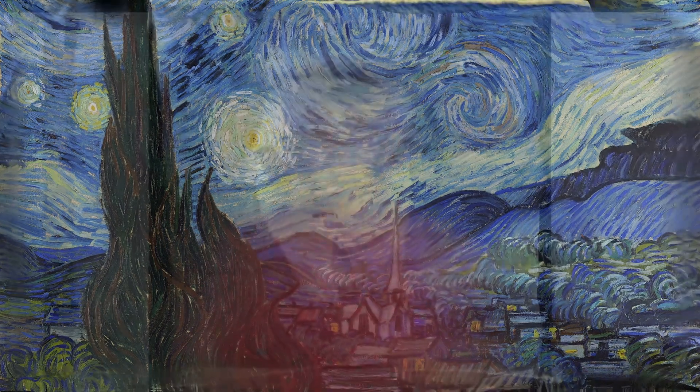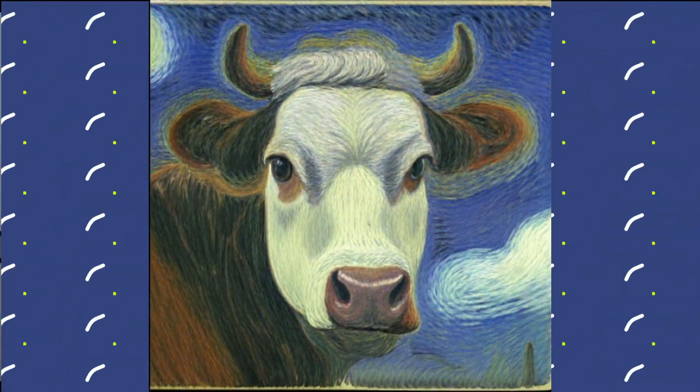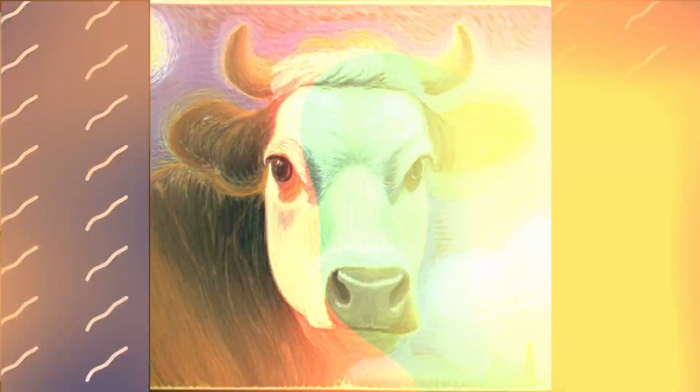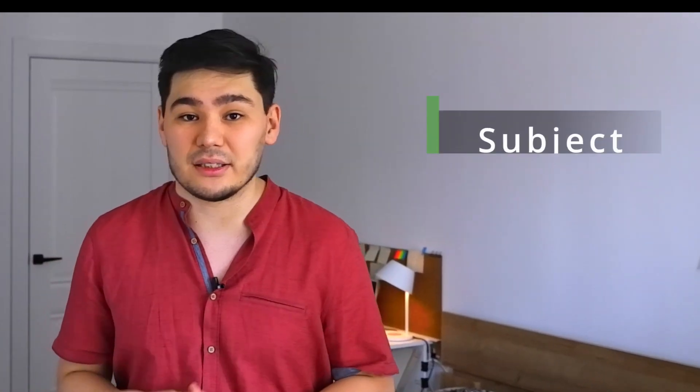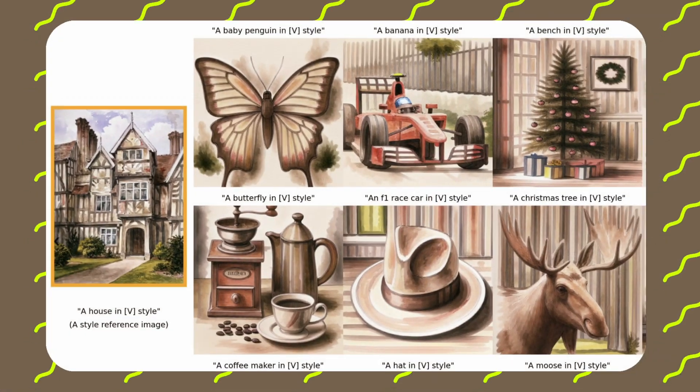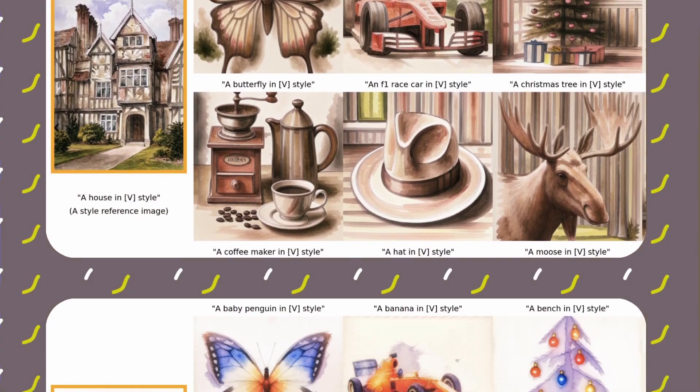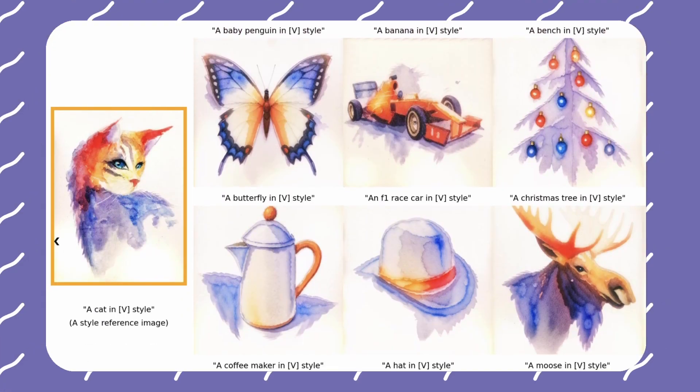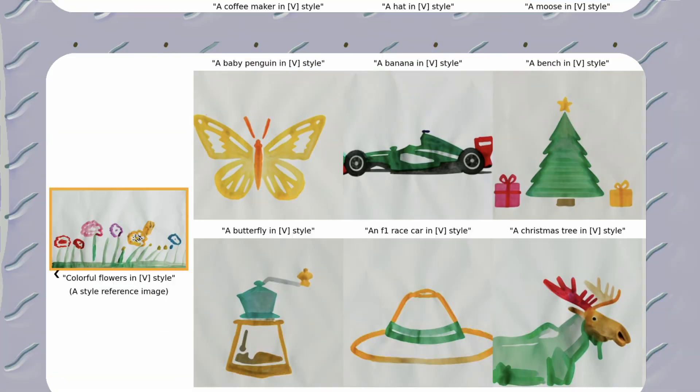You can upload Van Gogh's Starry Night and specify that you urgently need a cow in that particular style. And voila! But how does it happen? The tool analyzes the input image, identifying key elements like the subject, background, and color. Based on this information, Style Drop selects the style that matches the intended aesthetic.